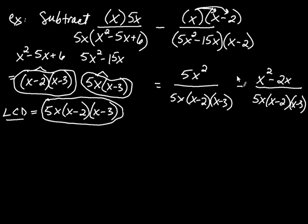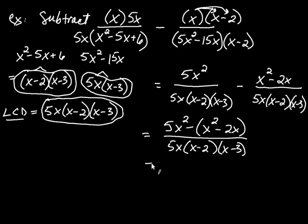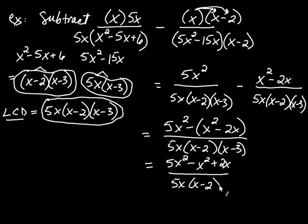Since the denominators are the same, take the numerator on the left and subtract off the numerator on the right. Because this is subtraction of something with addition or subtraction inside it, you always need parentheses to subtract off the whole thing. So this becomes 5x squared, take away the whole numerator in parentheses — x squared minus 2x — over the common denominator 5x times x minus 2 times x minus 3. Distribute the negative 1: 5x squared minus x squared, and negative 1 times negative 2x is positive 2x.